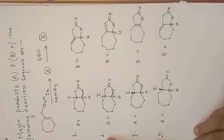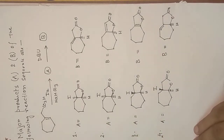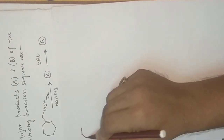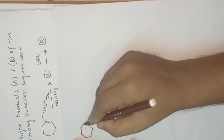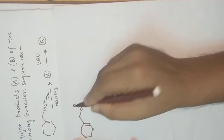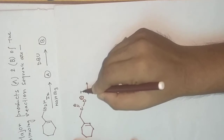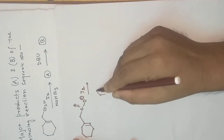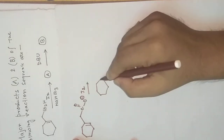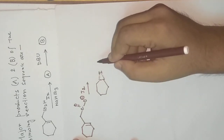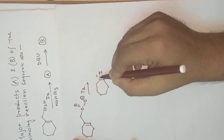We need to know the problem mechanism so we can easily predict the answer. Let us now understand the mechanism. We write the reactant, which is a seven-membered ring with a double bond. In the presence of a base, it produces the deprotonated species. With iodine, it produces the cyclic iodonium ion, and I consider that it is below the plane.